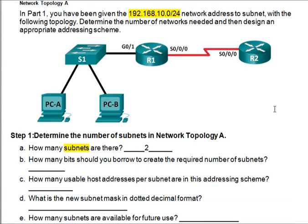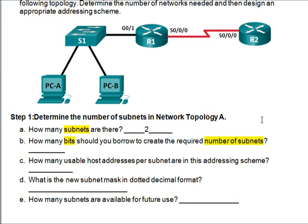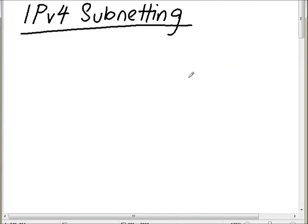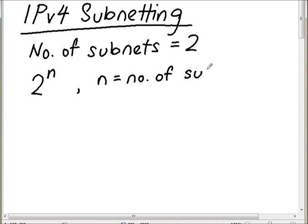Let's continue to the next part of the question: how many bits should you borrow in order to create the required number of subnets? To find out how many bits to borrow, we use the formula 2 to the power of n, where n is the number of subnet bits to borrow.